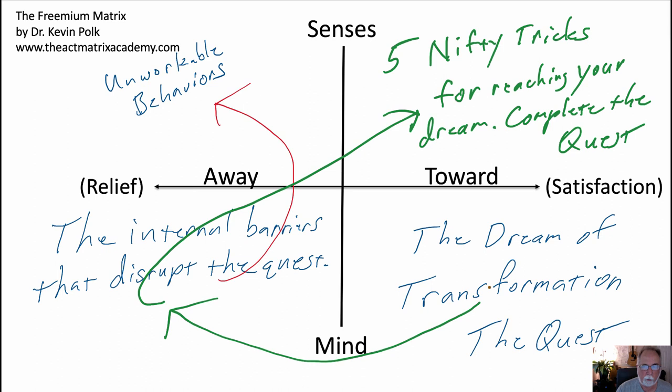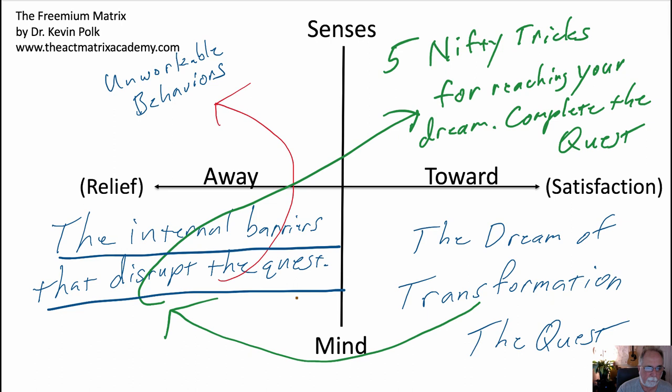We start off with that dream of transformation. And then, of course, the internal barriers that disrupt the quest show up — the self-doubts, the tiredness, and just all the stuff that can show up and get in the way of doing the quest, of achieving the transformation. And what that ends up in is we do unworkable behaviors to try and vanquish the internal barriers — I'm using quest language.